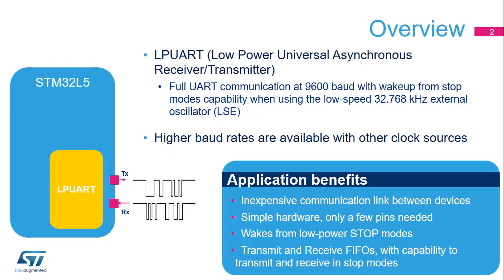The Low Power Universal Synchronous Asynchronous Receiver provides full UART communications at 9,600 baud when the LPUART is clocked using a low-speed external 32.768 kHz oscillator named LSE. Higher baud rates can be reached when it is clocked by clock sources different from the LSE clock.